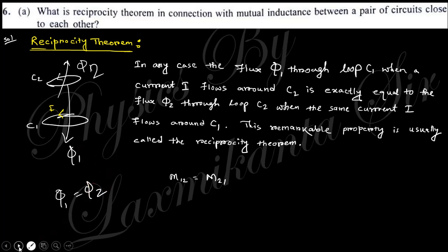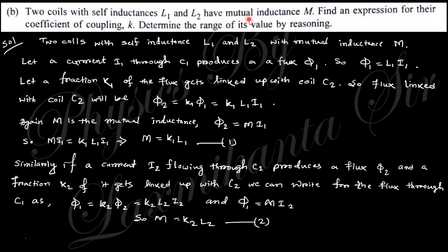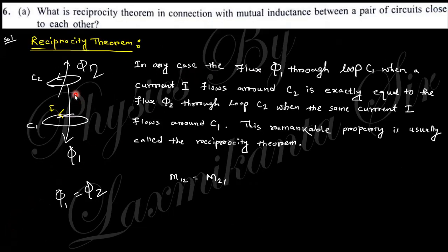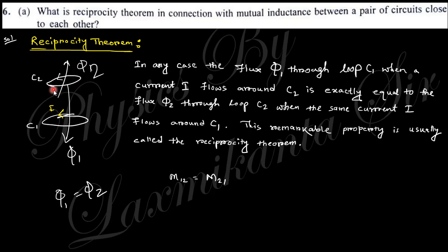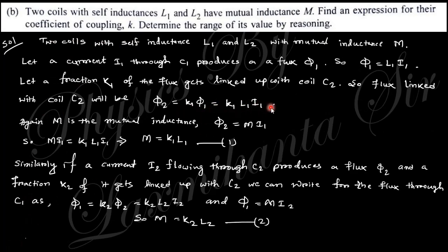Next: two coils with self inductance L1 and L2 and mutual inductance M — find the expression for their coefficient of coupling and determine the range of its value. Let a current i1 flow through coil C1, producing a flux φ₁ = L1·i1. If k1 is the fraction of flux linked with coil C2, then the flux through C2 is φ₂ = k1·φ₁ = k1·L1·i1. Since M is the mutual inductance, φ₂ = M·i1, so M = k1·L1.